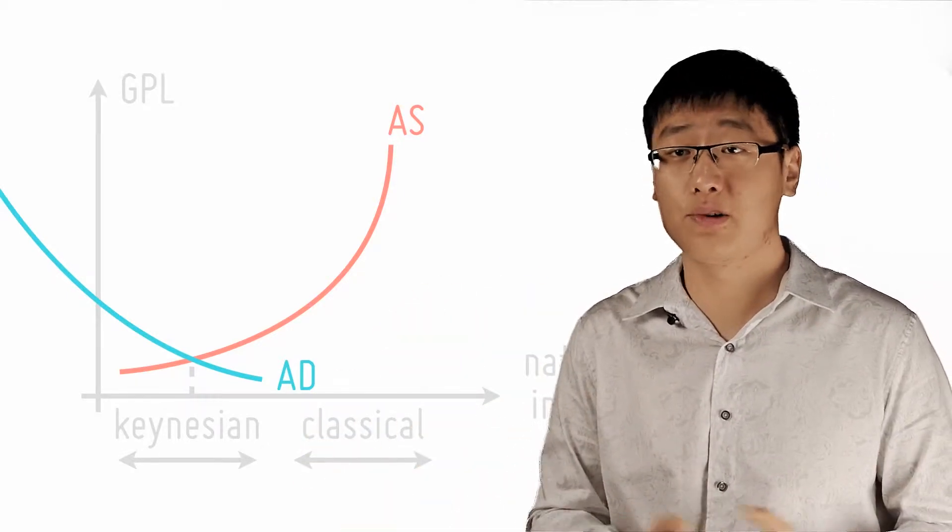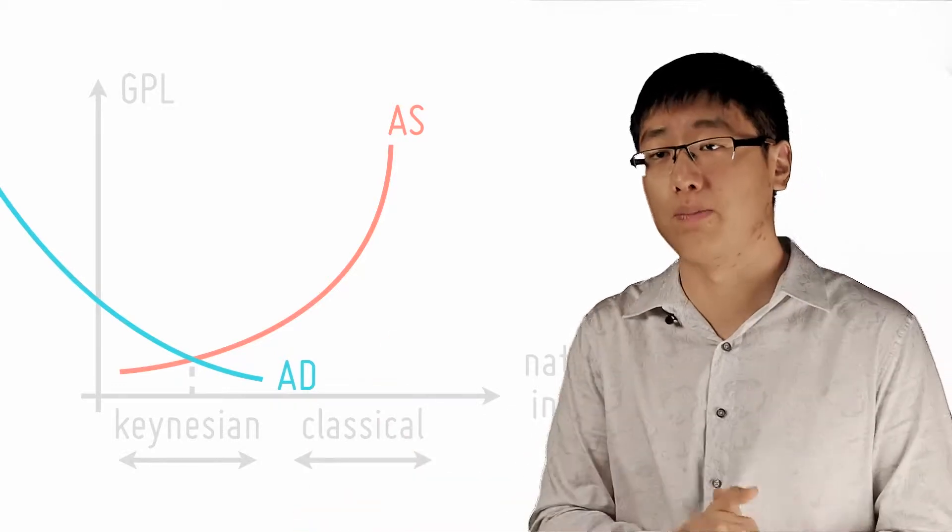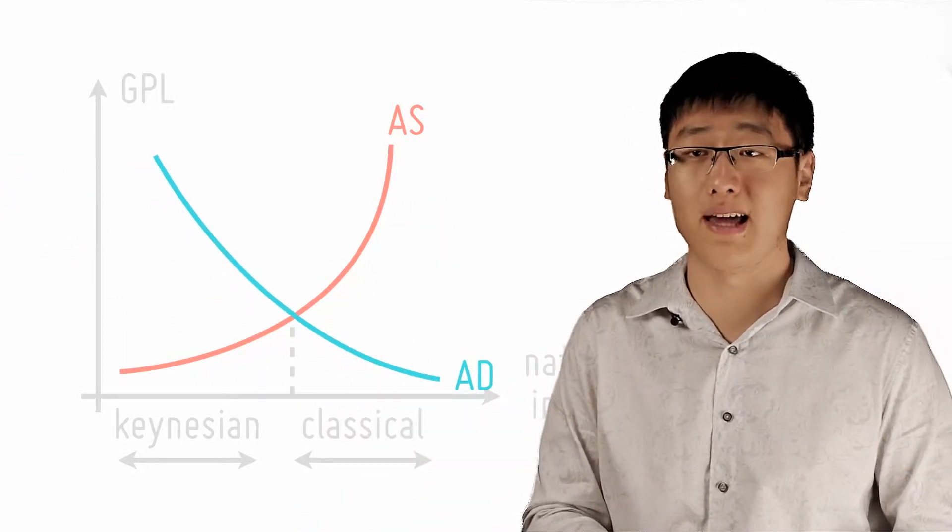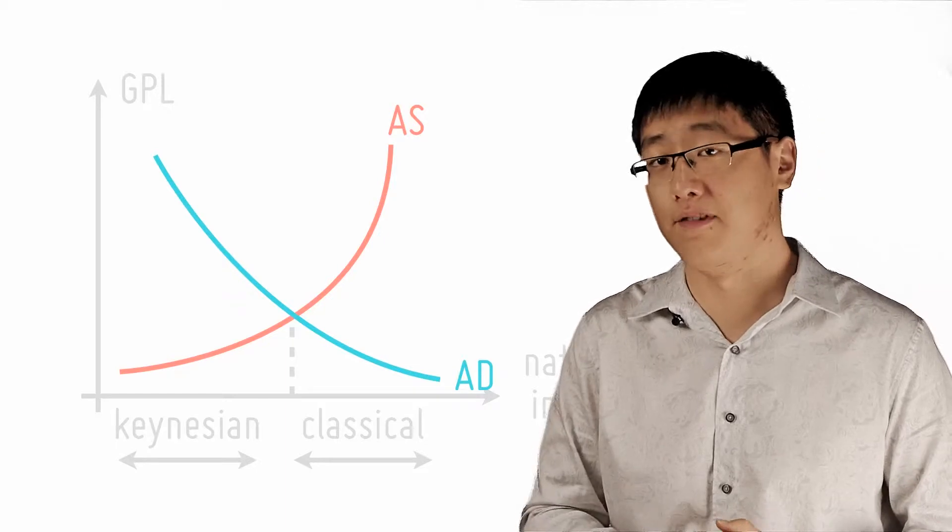Then when you decrease the interest rate and exercise expansionary monetary policy, you can decrease cyclical unemployment because that is cyclical unemployment in the first place.